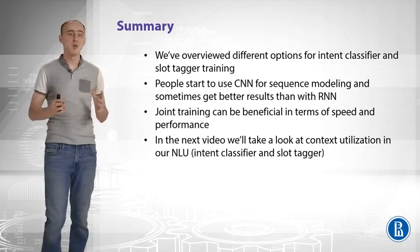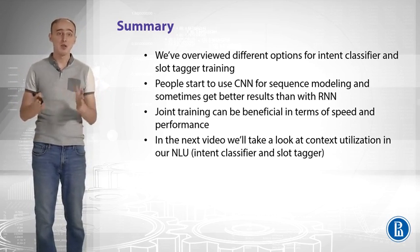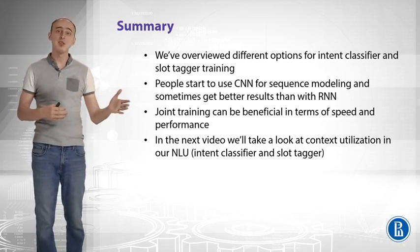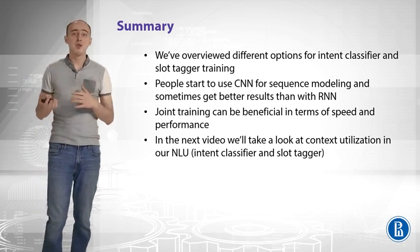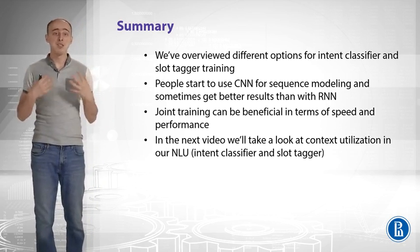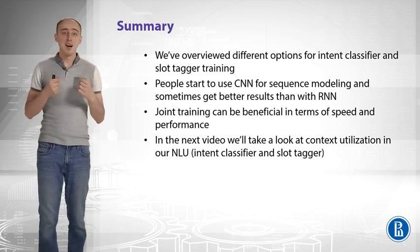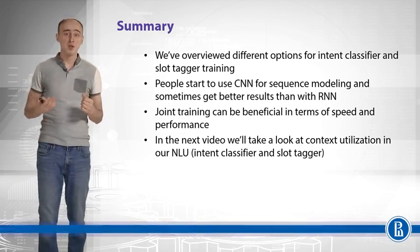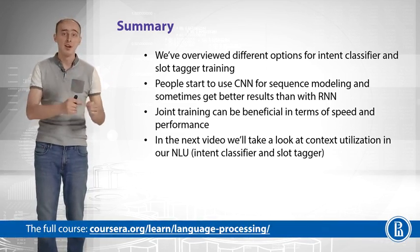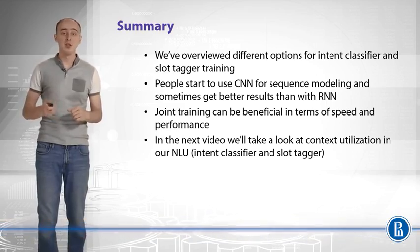Let's summarize what we have covered. We looked at different options for intent classifier and slot tagger — from classical approaches all the way to deep learning. CNNs are increasingly used for sequence modeling and sometimes achieve better results than RNNs, which is surprising. Joint training can be beneficial both in terms of speed and performance for your slot tagger and intent classifier. In the next video, we will look at context utilization in our NLU, intent classifier, and slot tagger.